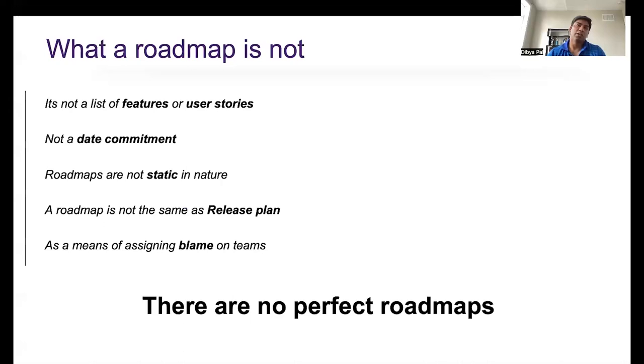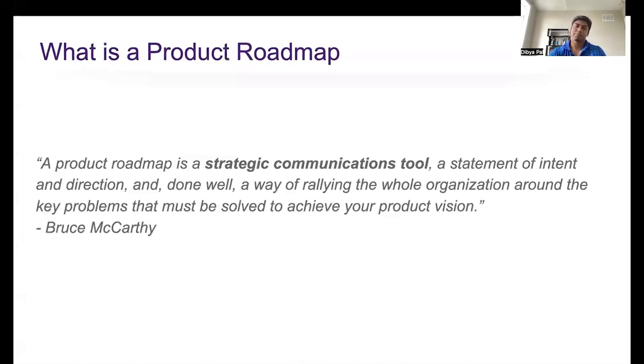Before going into what a roadmap is, let's just reconsider what a roadmap isn't. It's not a list of to-do features, which are outputs. It's not a list of dates and deadlines. Roadmaps are dynamic in nature. They change over time based on customer feedback and company strategy. And roadmaps aren't release plans, and neither a tool to blame other teams. So remember, there are no perfect roadmaps. In search of the perfect roadmap, we lose sight of the big picture.